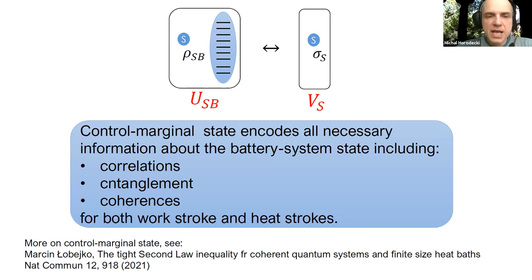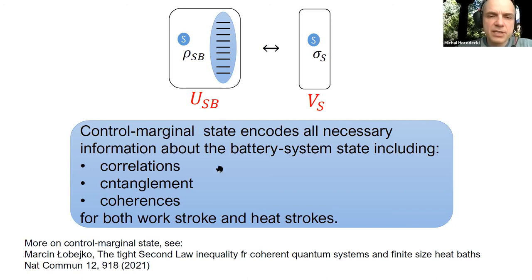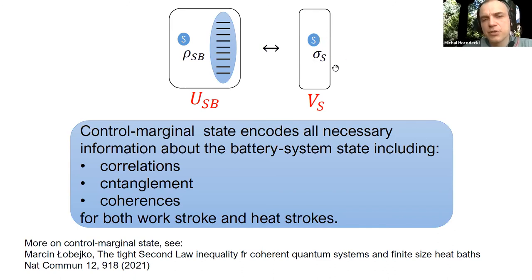To summarize this part: the total system of working body and battery can be reduced to just the control marginal state on the system alone. The control marginal state encodes correlations, coherences, and even classical correlations between the working body and battery—making it much easier to analyze engine performance.